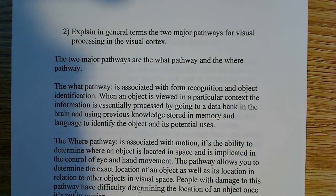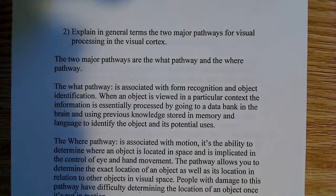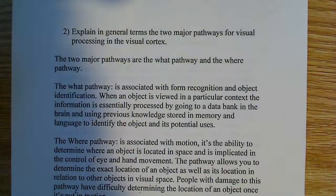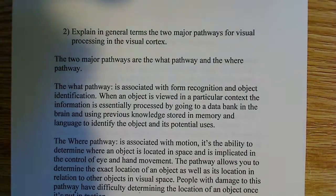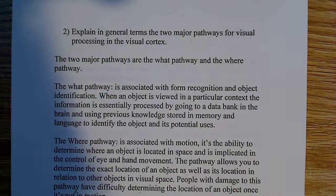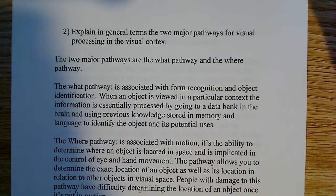This is another neurobiology question involving the eye. In this case, we're going to talk about explaining in general terms the two major pathways for visual processing in the visual cortex. We want to know what happens to this information once it's received by the brain — what does the brain do with the information? What happens in the visual cortex and how do we make sense of what we're seeing?